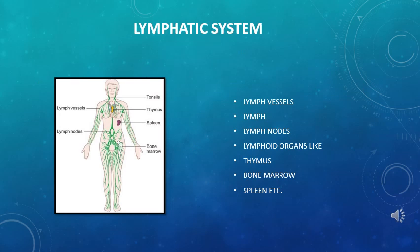Like the circulatory system, the lymphatic system consists of millions of lymph vessels which carry a colorless fluid called lymph. The lymphatic system also includes lymph nodes and some lymphoid organs like the thymus gland, bone marrow, and spleen.